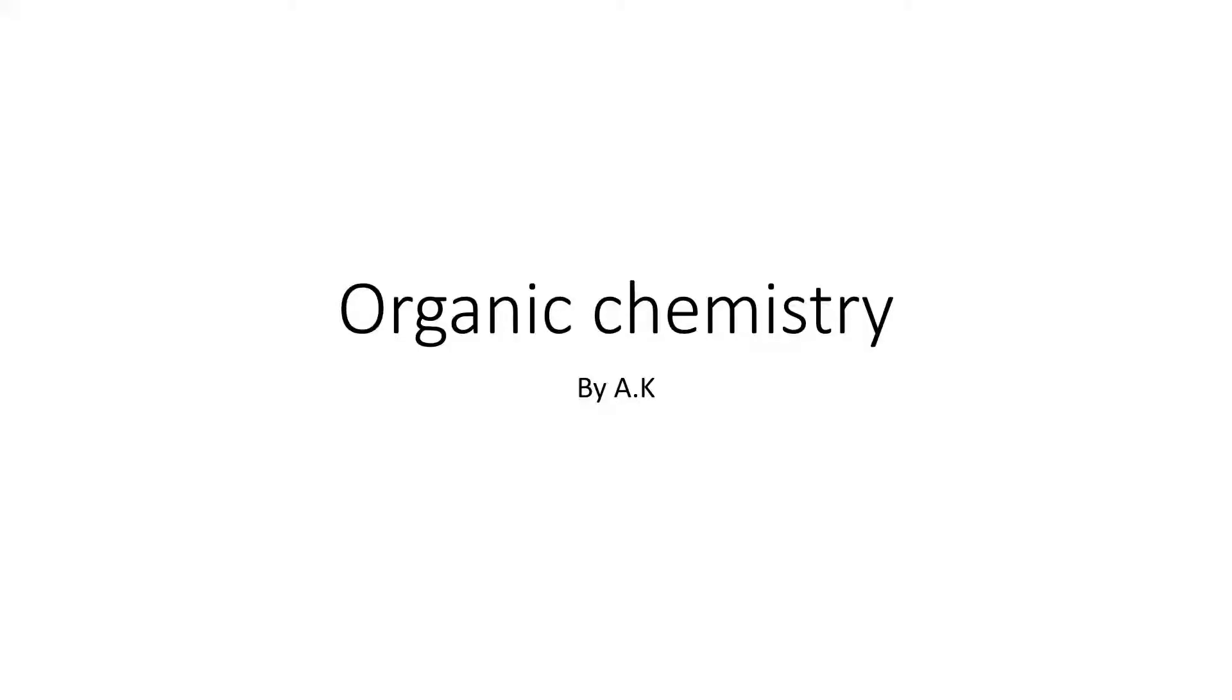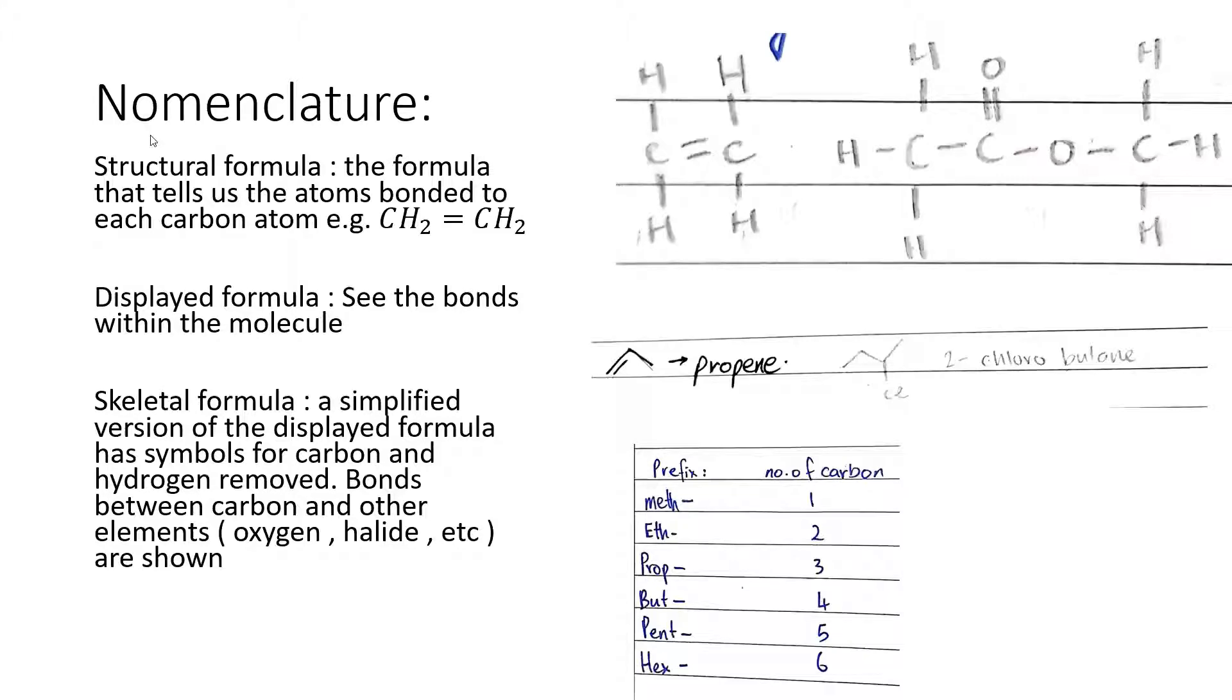Welcome back everybody. Welcome to AS level chemistry. Today we'll be doing organic chemistry for AS level and let's get started. Okay, let's look at some nomenclature. Structural formula is a formula that tells us the atoms bonded to each carbon atom. Our example is as such. Basically each atom bonded to how carbon is showcased with subscript. So CH2 and CH2 in this case.